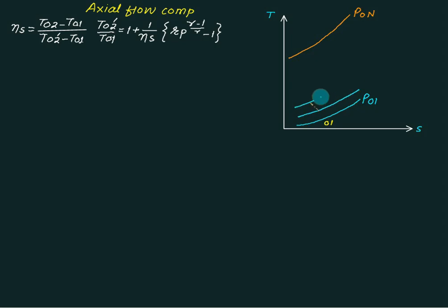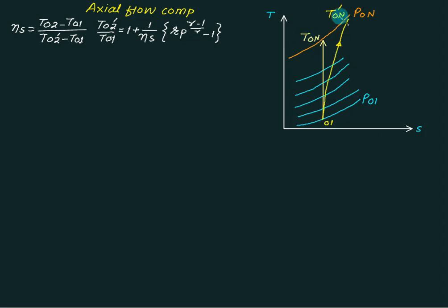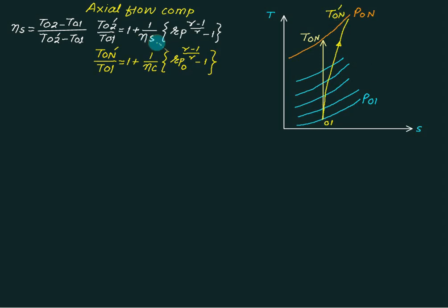With n stages — stage 1, stage 2, stage 3, stage 4, up to stage n — T0n dash is the actual temperature at the end of n stages, and T0n is the theoretical (isentropic) temperature. This overall ratio is called the total efficiency or compressor efficiency. The stage pressure ratio and the overall pressure ratio appear in analogous efficiency equations for the stage and the compressor respectively.